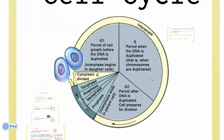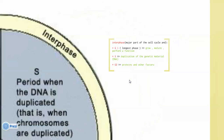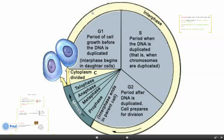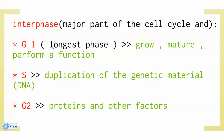The cell cycle consists of two phases: the interphase and the M phase (mitosis). The interphase is the major part of the cell cycle, making up about 75% of it. It consists of G1, S, and G2. G1 is the longest phase — the cell grows, matures, and performs its function. The S phase is where duplication of the genetic material, the DNA, occurs. In G2, after DNA duplication, the cell duplicates proteins and other factors to prepare for division.